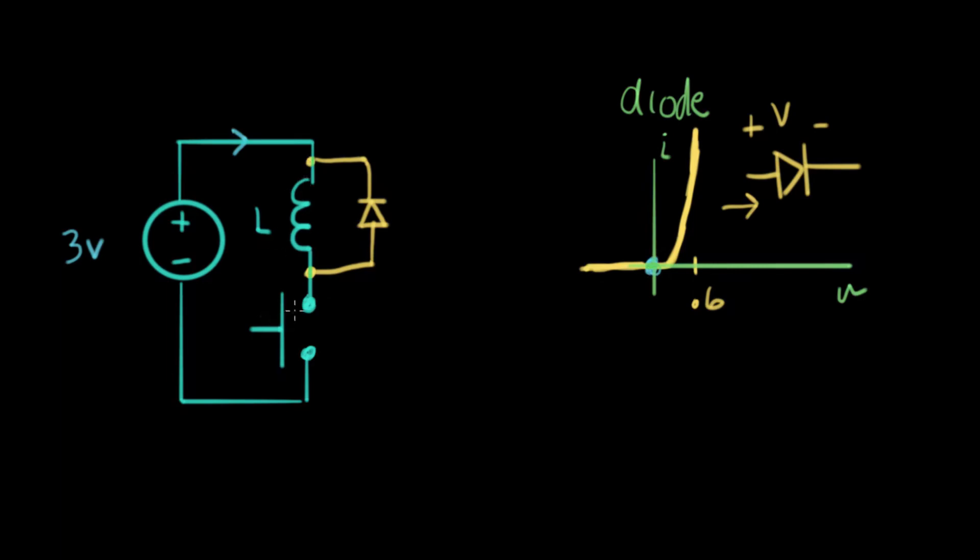Now we push the button down. And a current starts to flow through the inductor. And there's three volts across the inductor. So let's look at that. There's plus three volts here. And there's zero volts down here. So there's three volts on this side of the diode. This is the side where it doesn't conduct.